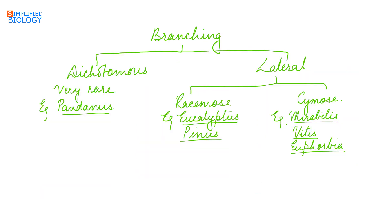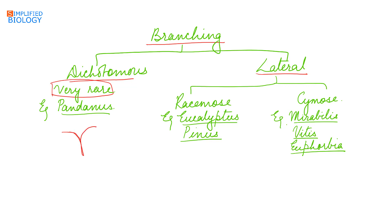Next is branching — that is, branches developing on the stem. Branching is of two types: dichotomous and lateral. Dichotomous branching is very rare; in this, the tip bifurcates or divides into two branches. It is usually seen in lower plants, and in angiosperms an example is Pandanus, that is screw pine.